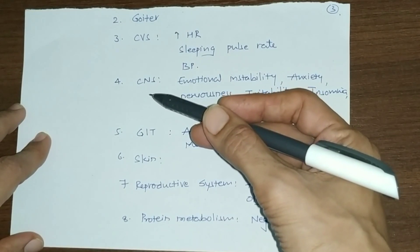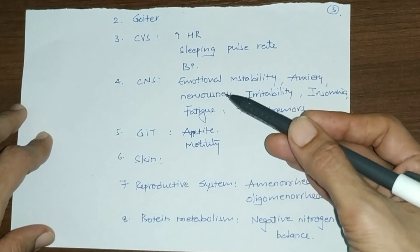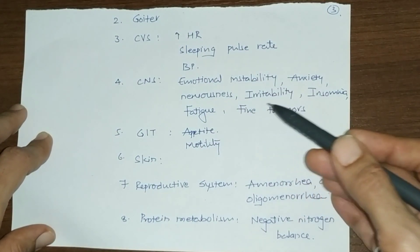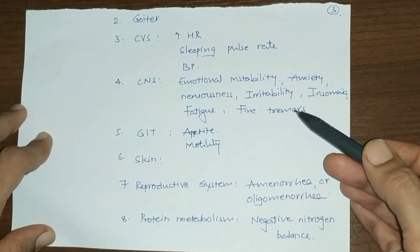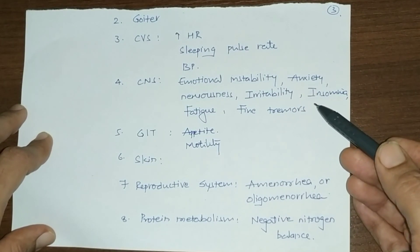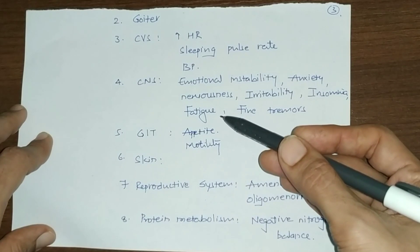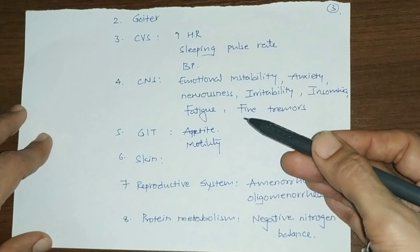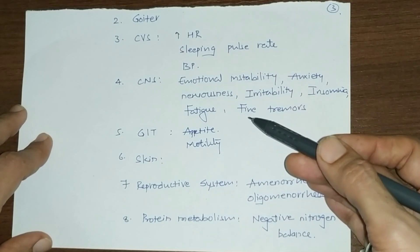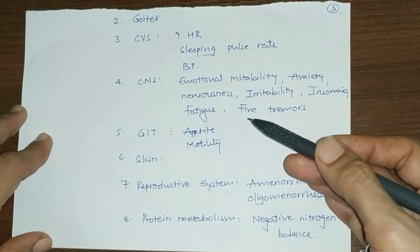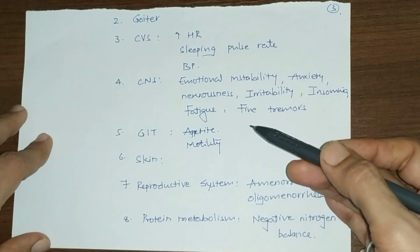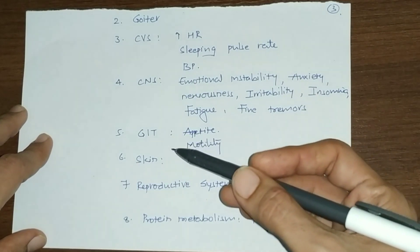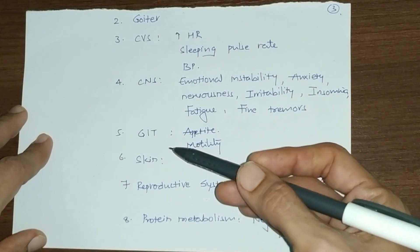Diastolic blood pressure decreases due to peripheral vasodilation. Effects of hyperthyroidism on the nervous system include emotional instability, anxiety, nervousness, irritability, insomnia, fatigue, and fine tremors. Neuromuscular features include muscle weakness and exaggerated tendon reflexes, and the person may show thyrotoxic myopathy.